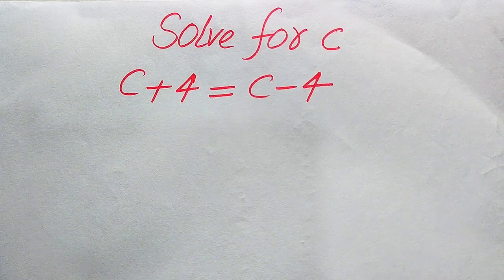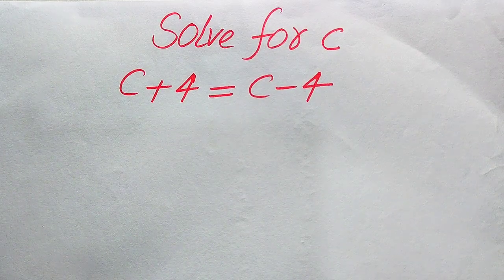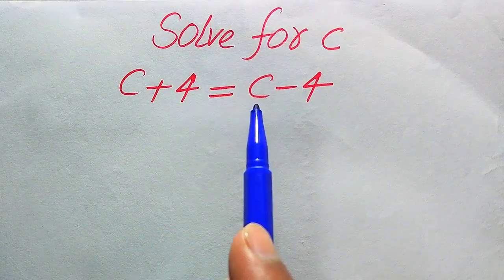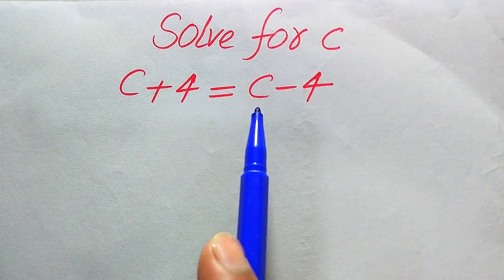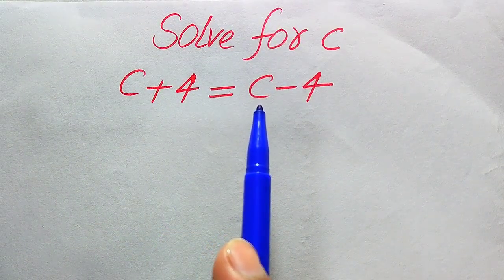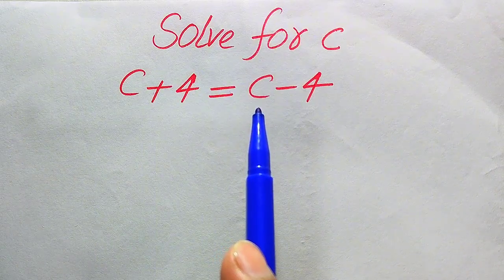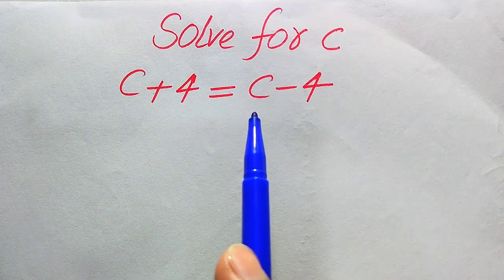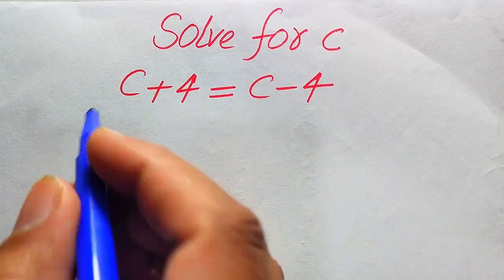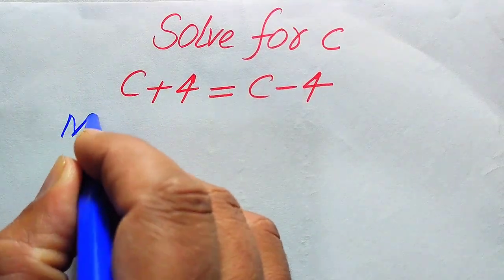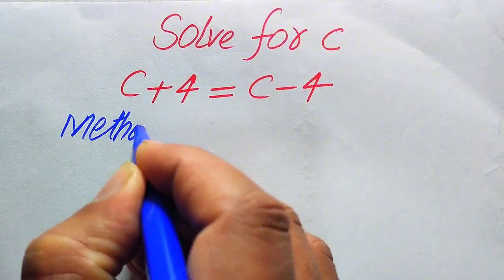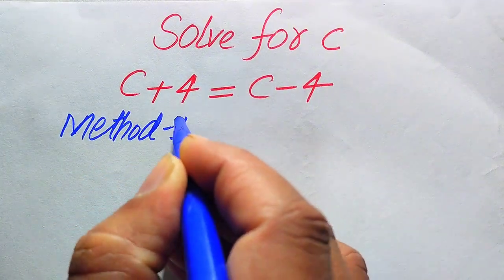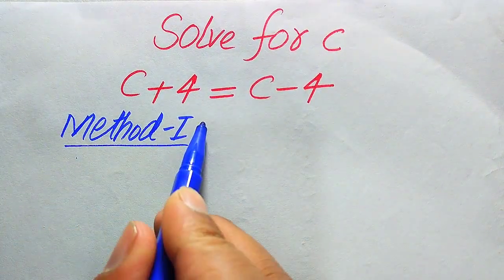Hello everyone, welcome. We will solve this algebra problem: √(c + 4) = √(c − 4). We will find all the roots of this equation, then verify which roots are solutions and which are extraneous roots. We will solve this problem using two methods.